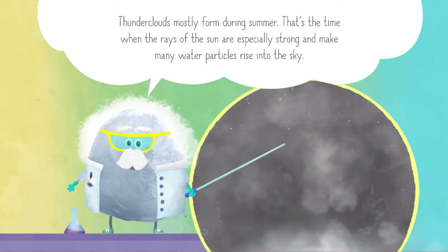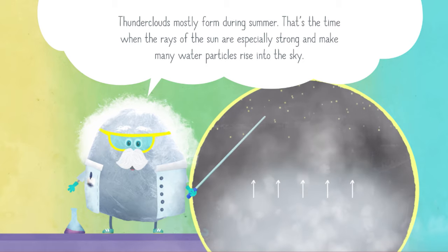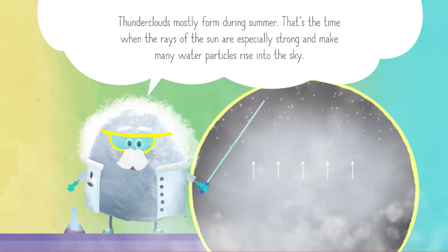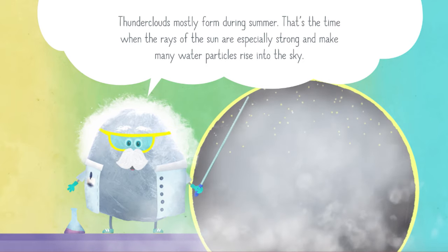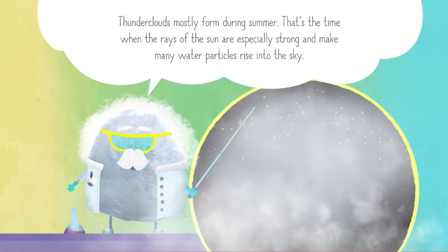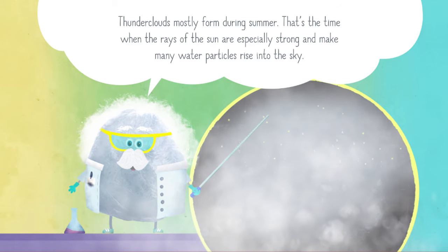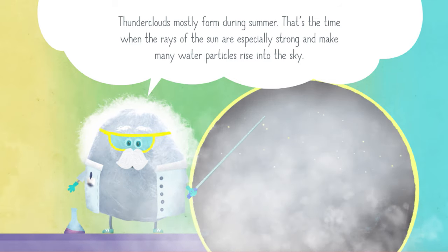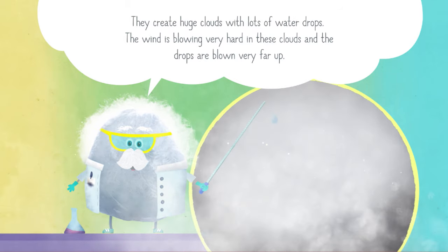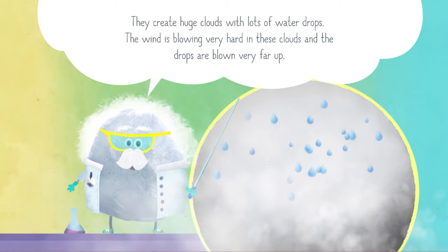Thunderclouds mostly form during summer. That's the time when the rays of the sun are especially strong and make many water particles rise into the sky. They create huge clouds with lots of water drops.